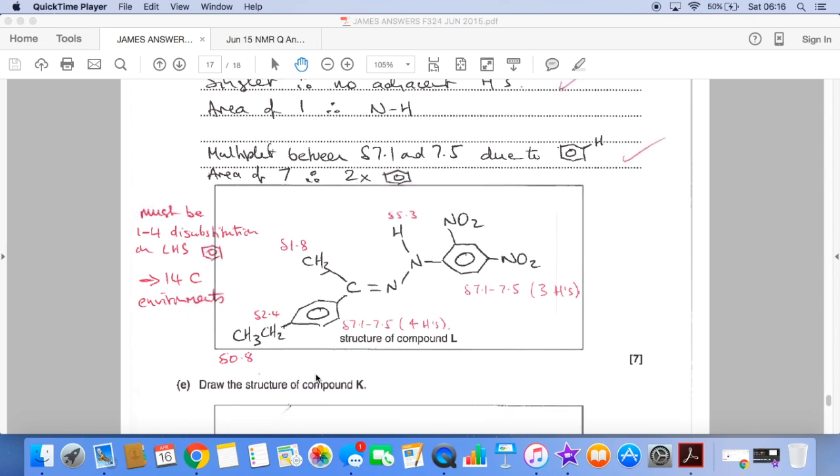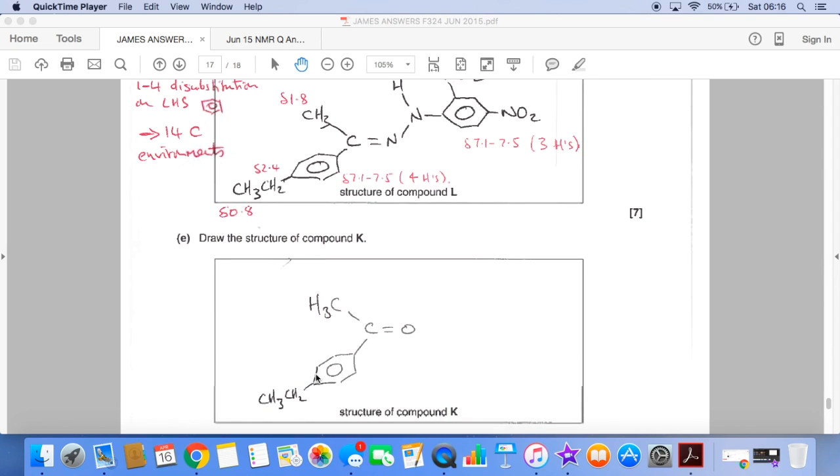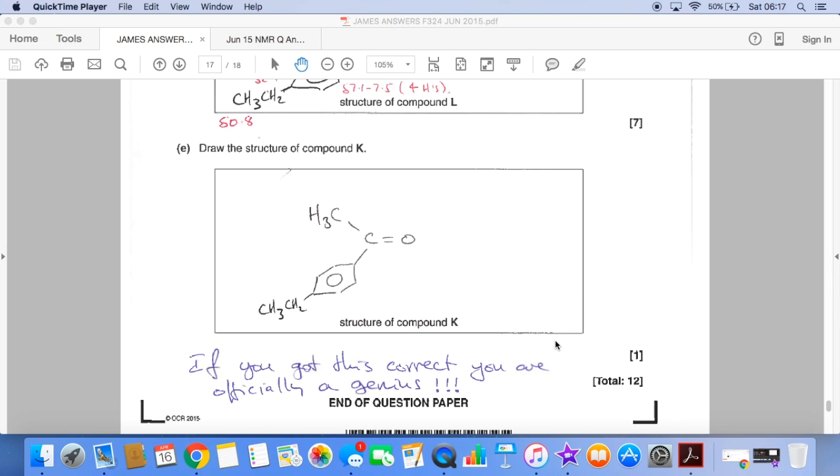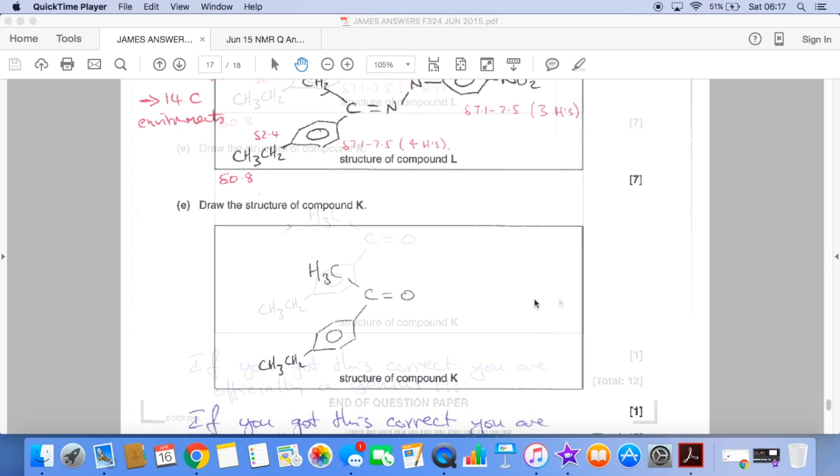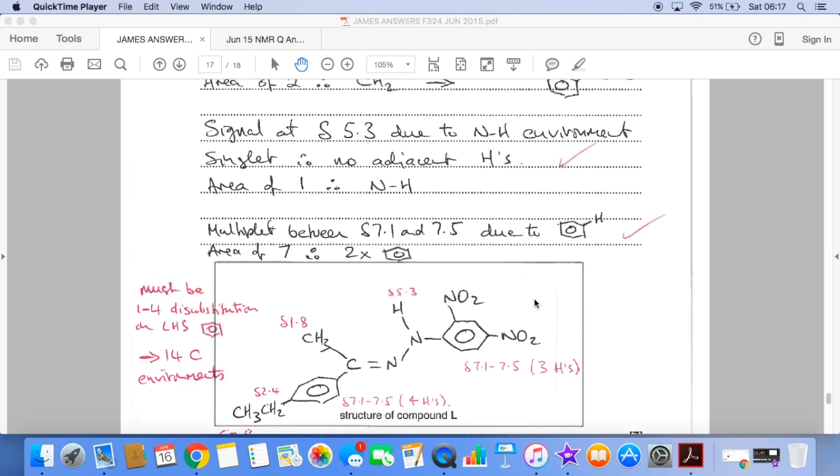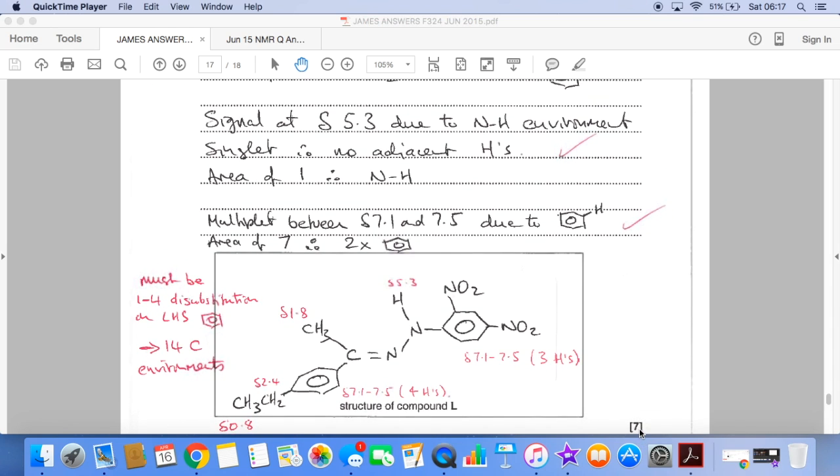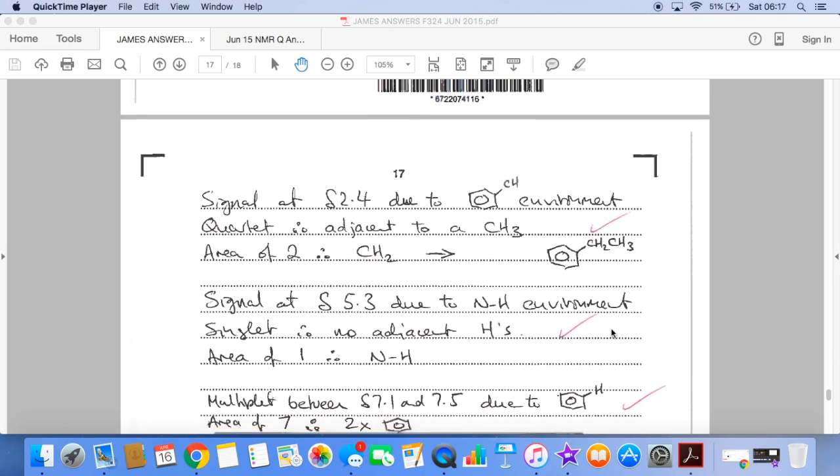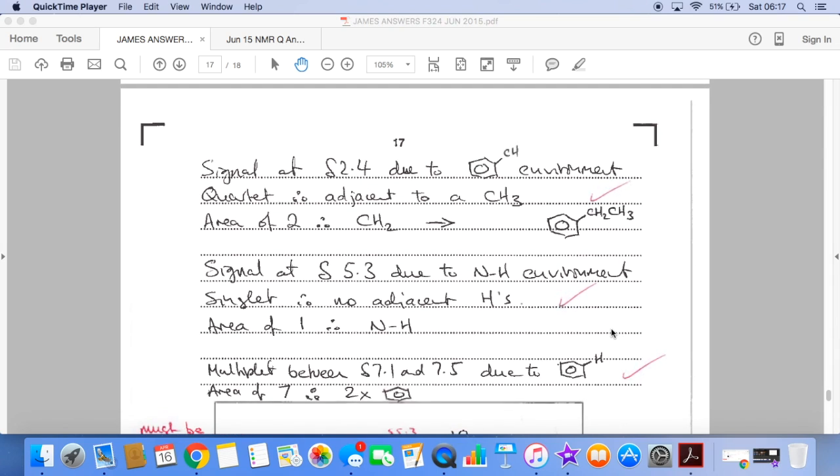The last part of the question is basically just compound L. It's obviously the ketone that's reacted with the 2,4-DNP, and it's just got to have those R groups on that you've established. So if you got that right, you are officially a genius. But what I would say is, yes, that was hard. But 5 of those 7 marks were for just saying stuff that's fairly straightforward.